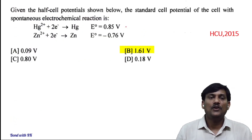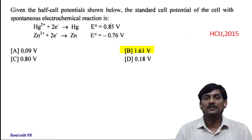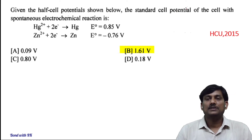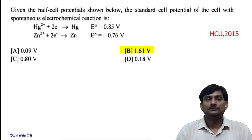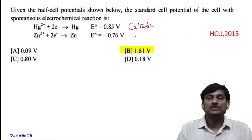Given the cell potential shown below, the standard cell potential of the cell with spontaneous electrochemical reaction is: For constructing a cell with spontaneous electrochemical reaction, the half-cell which has a more positive potential value should act as cathode. So, this one is cathode — this one has more positive potential value — and this one should act as anode.